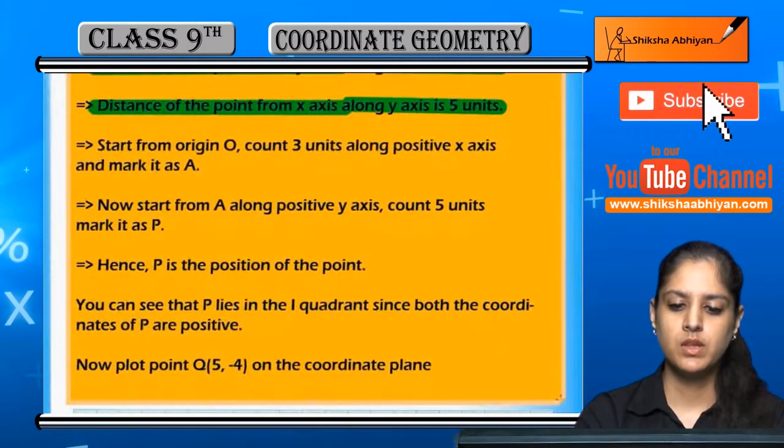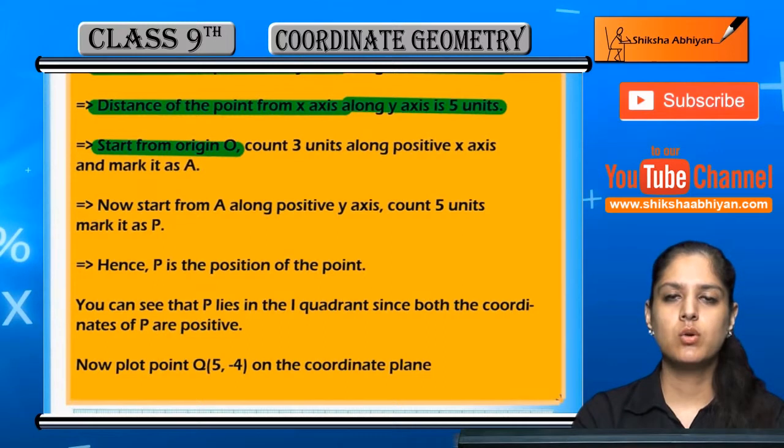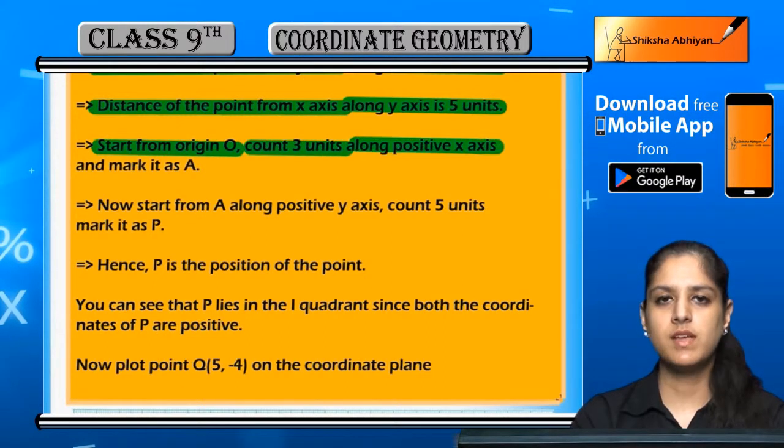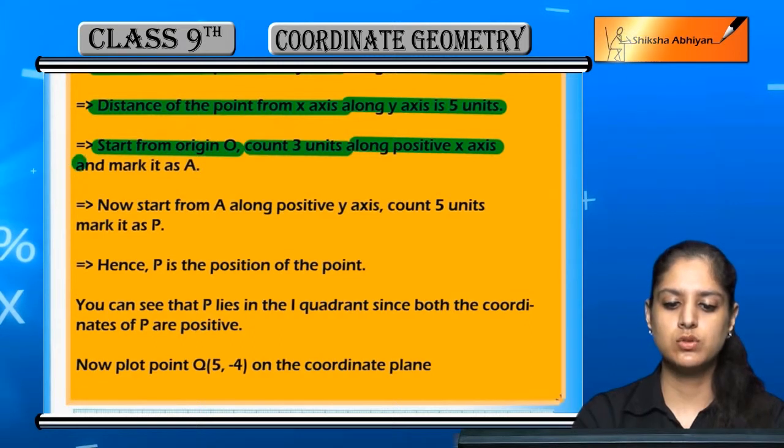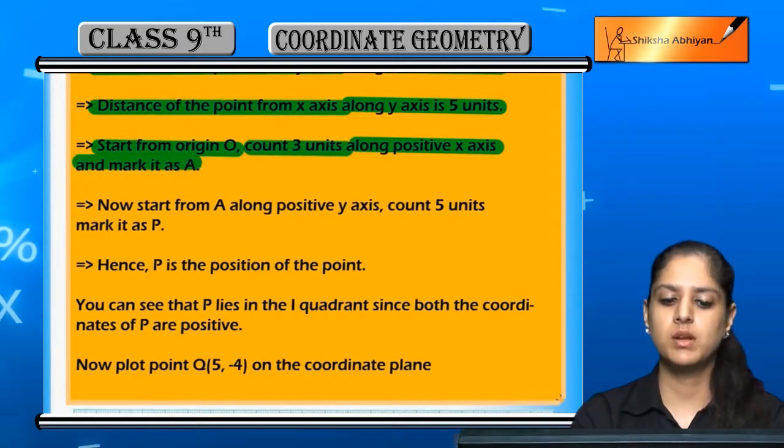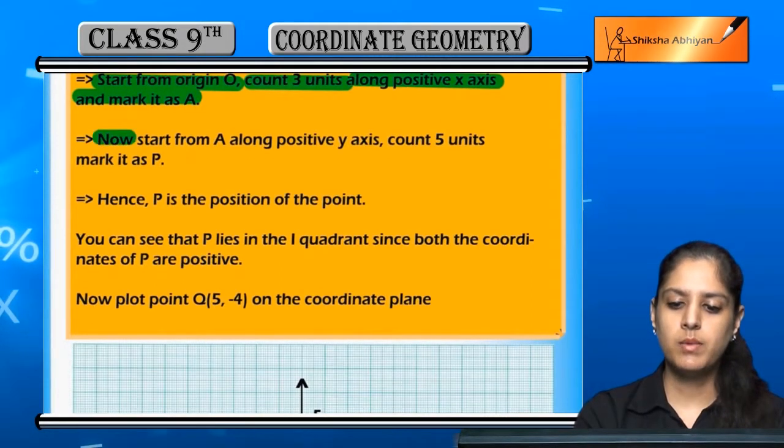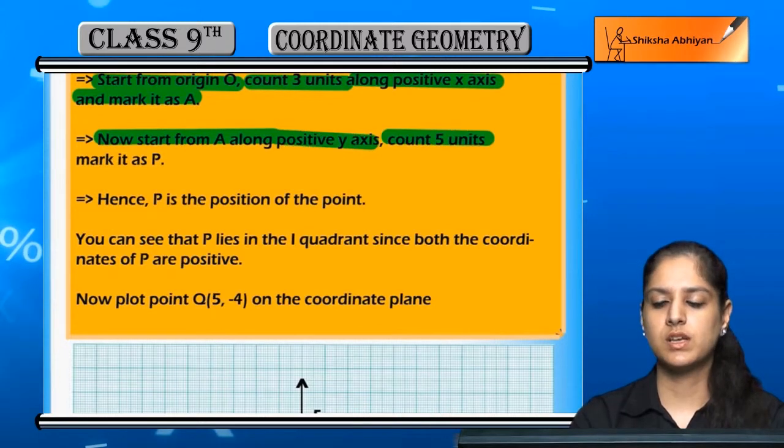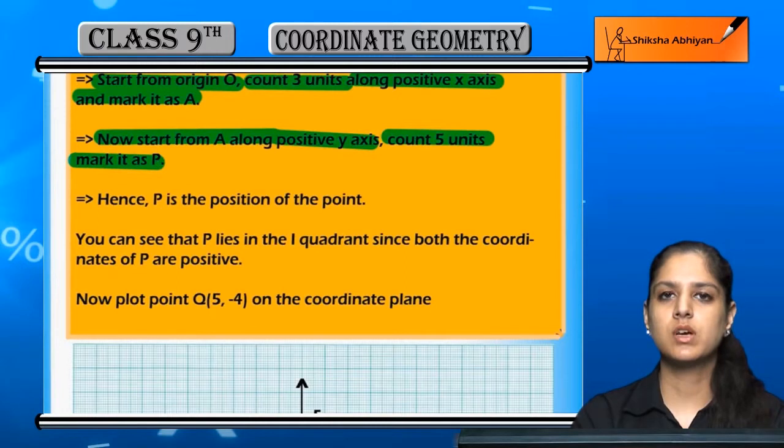Agar hame origin O se start karenge, 3 units hame positive x-axis mein count karna hai aur usko mark karenge A. Ab A se start karke hame positive y-axis ki taraf move karenge, 5 units count karenge.